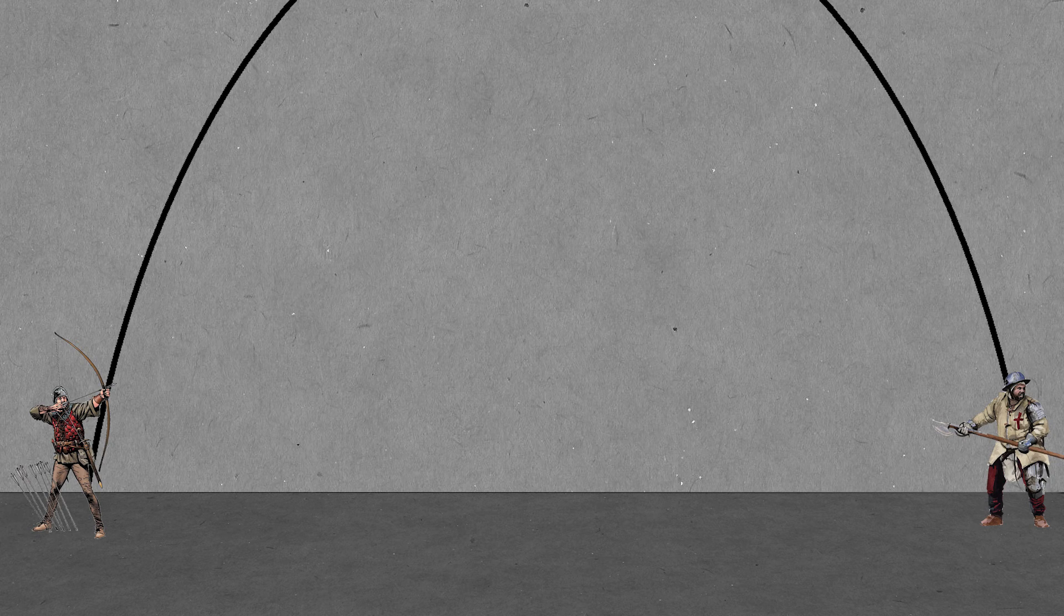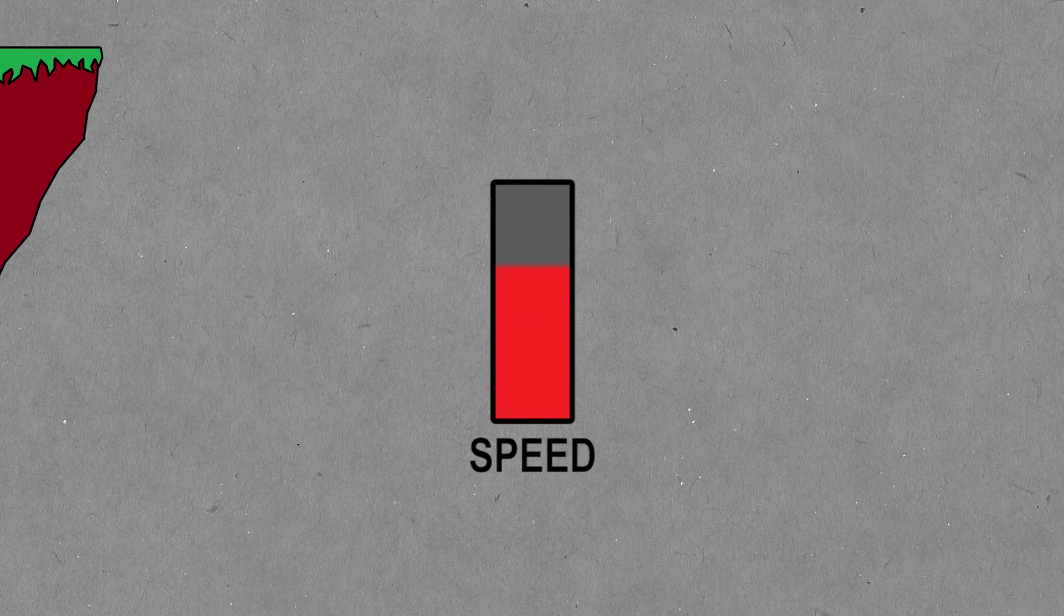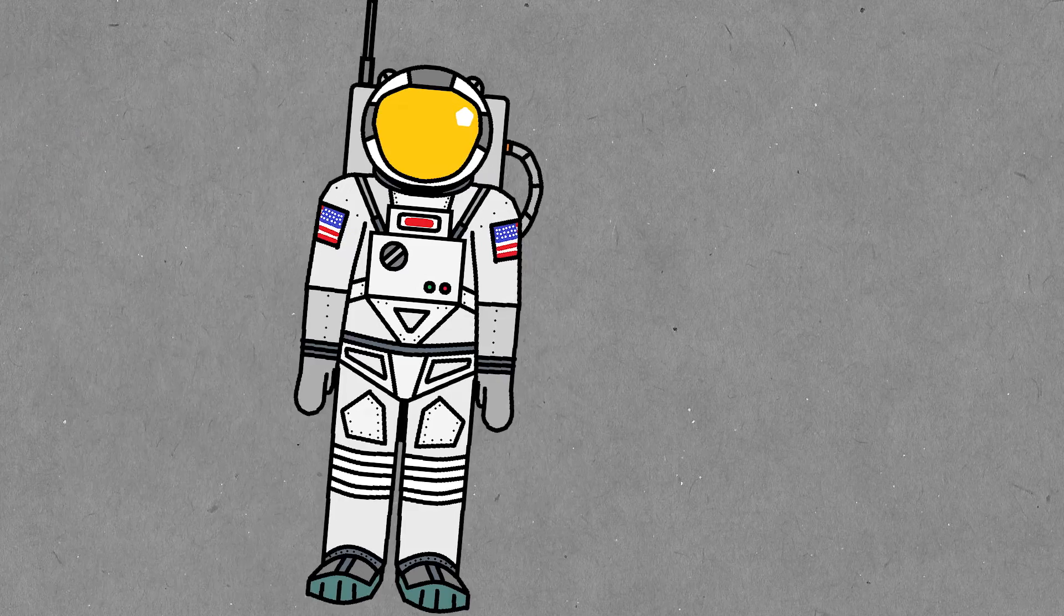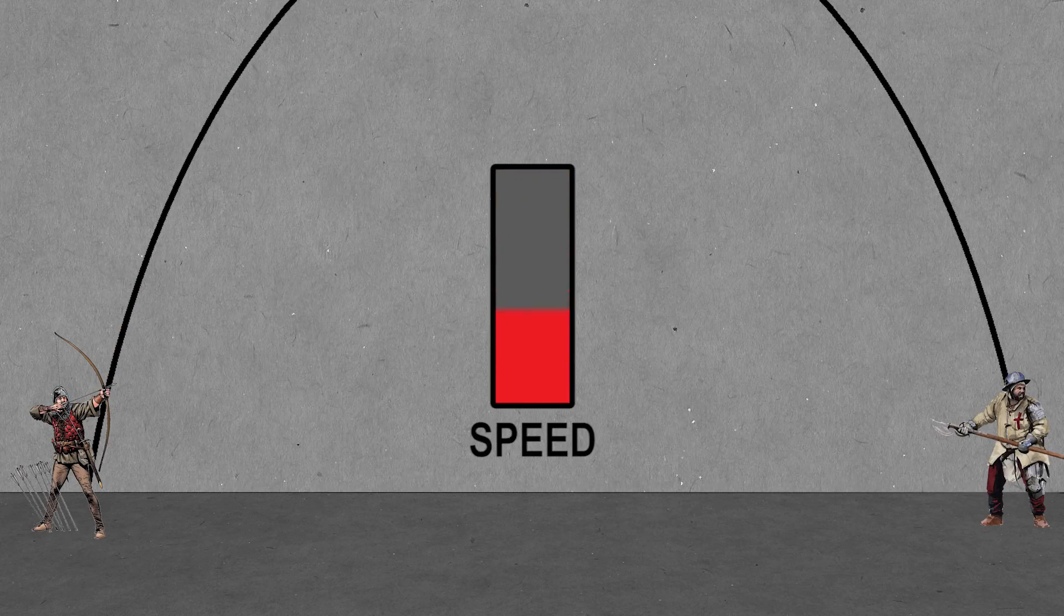So I understand why at first glance the arcing trajectory looks better. Intuitively, we think that falling makes something faster or it gives it more energy, and this is sort of true. However, when we consider the physics of the situation, we realize it takes energy to get the arrow up high.